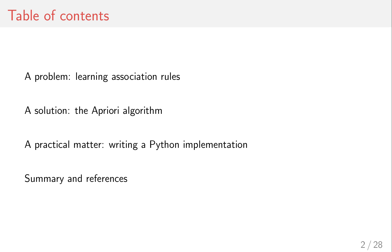I'm going to talk about the problem of learning association rules and motivate it with a few simple examples. I'll also talk about a solution to the problem: the Apriori algorithm. There are other algorithms, but the Apriori algorithm is a reasonably simple and popular solution. I'm also going to talk about writing a Python implementation of this algorithm, which is how I got into it. I learned about this algorithm at university, and after someone asked a question in a forum about implementing it in Python, I read the original article and implemented it myself. I'll give you a link to my implementation in the description.